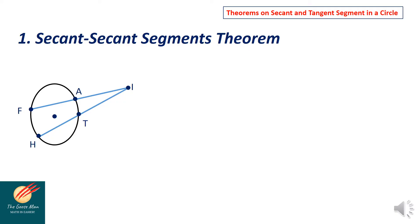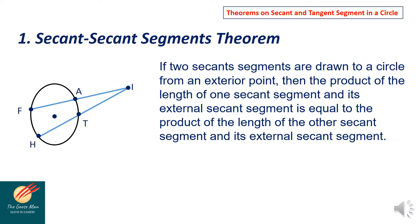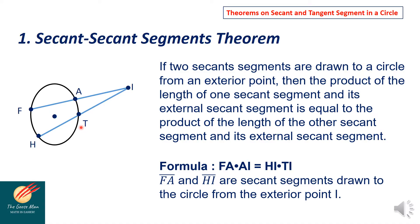We will talk about the first theorem: the secant-secant segment theorem. If two secant segments are drawn to a circle from an exterior point, then the product of the length of one secant segment and its external secant segment is equal to the product of the other secant segment and its external segment. From our illustration, Fi times Ai equals Hi times Ti. So the formula is: FA times AI equals HI times TI, where FA and HI are secant segments drawn to the circle from exterior point I.